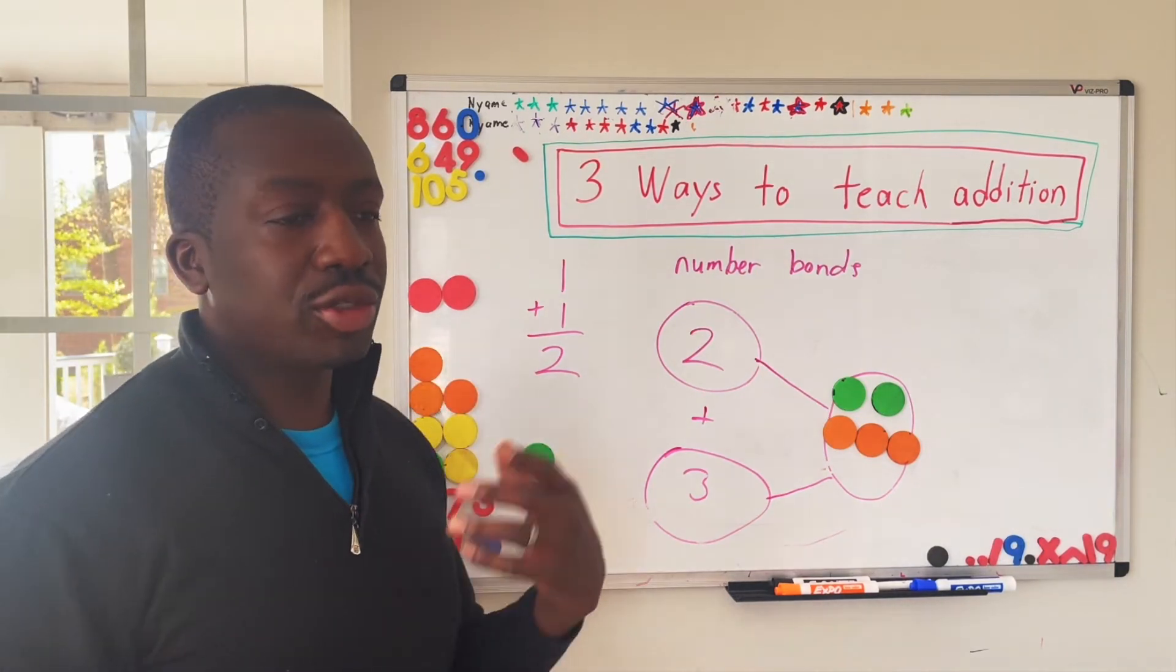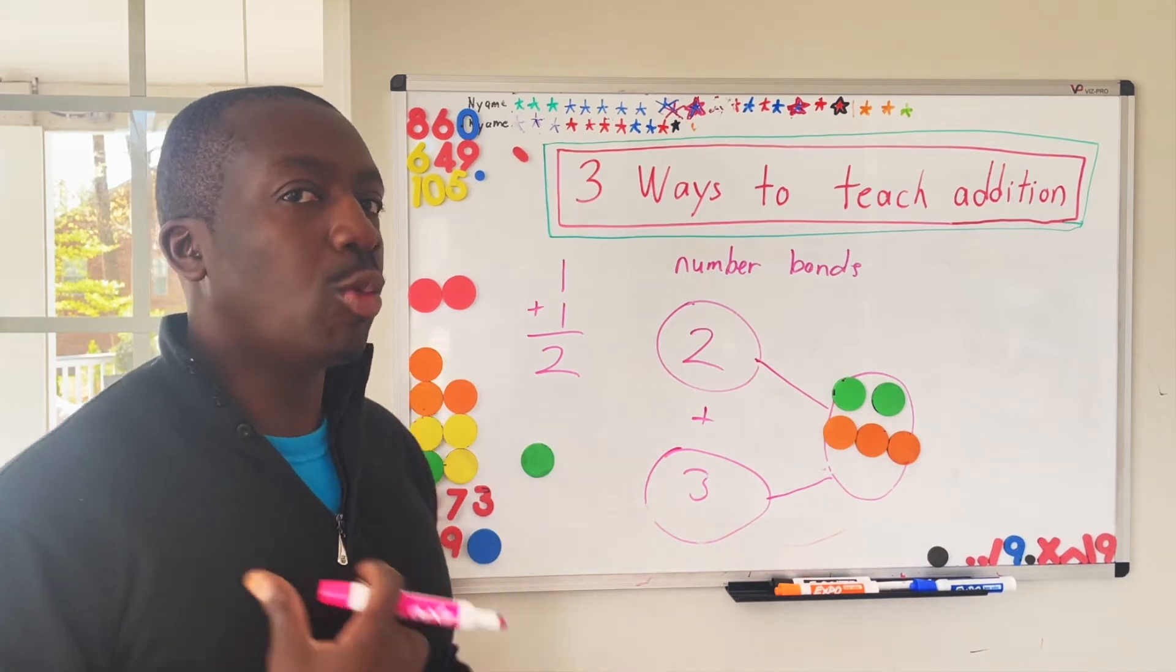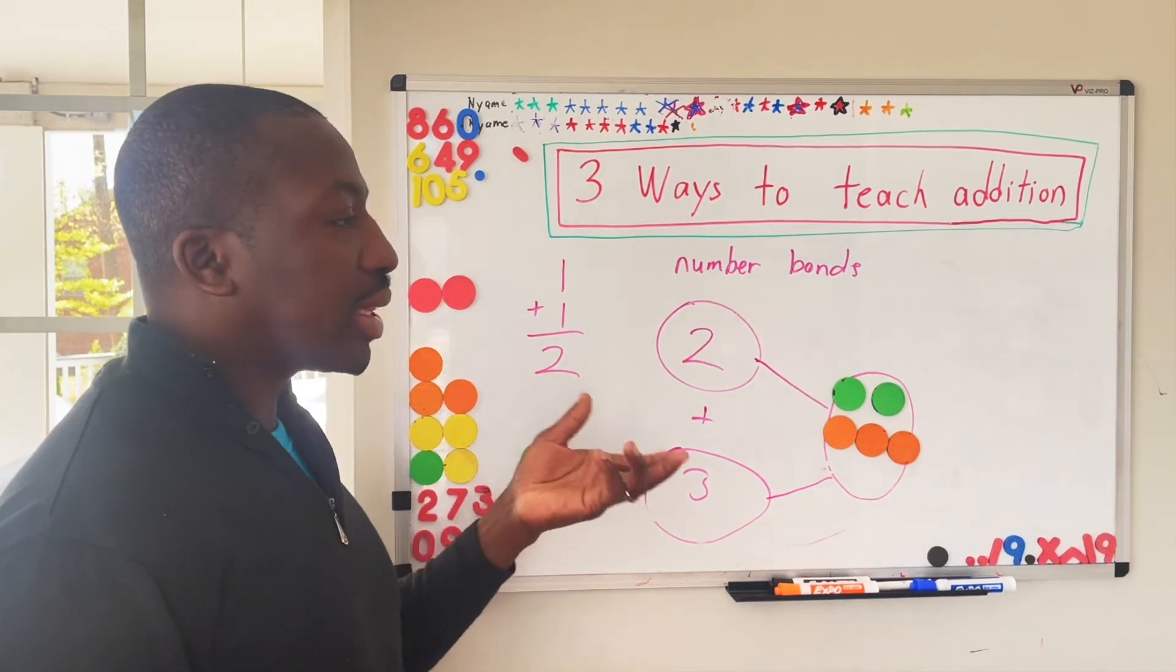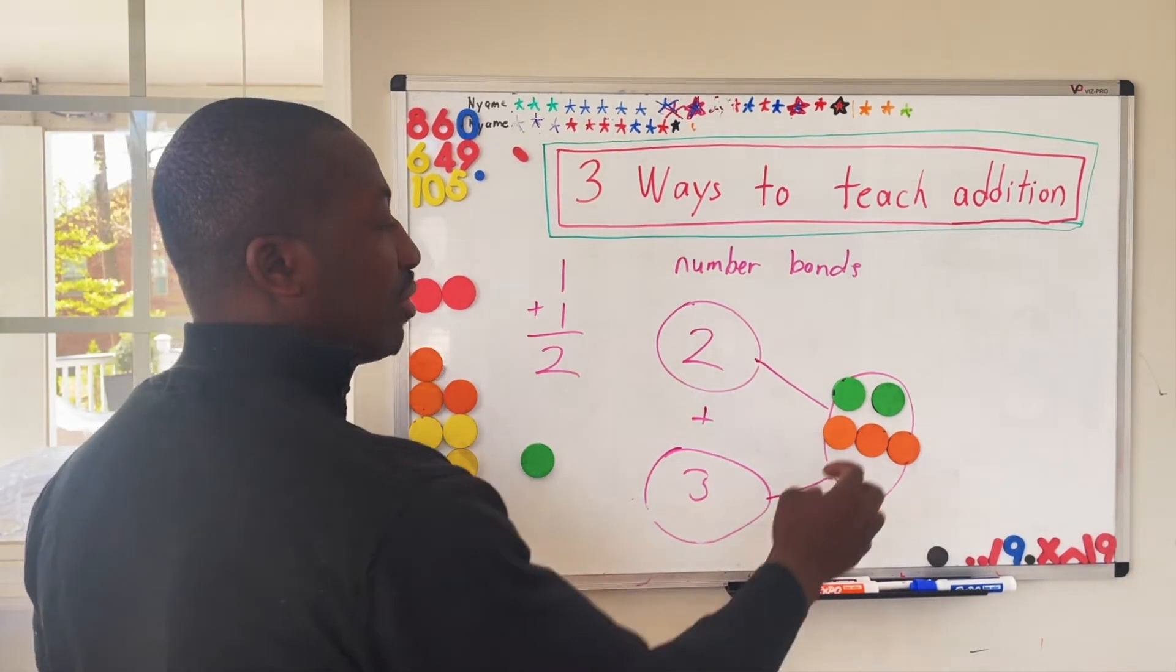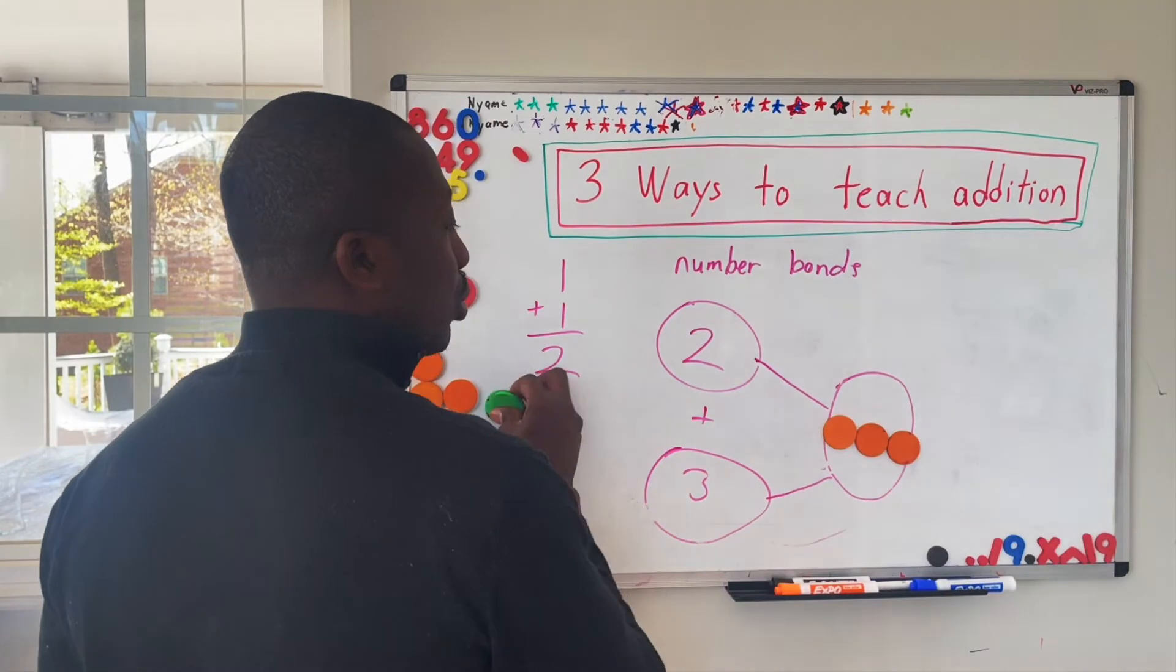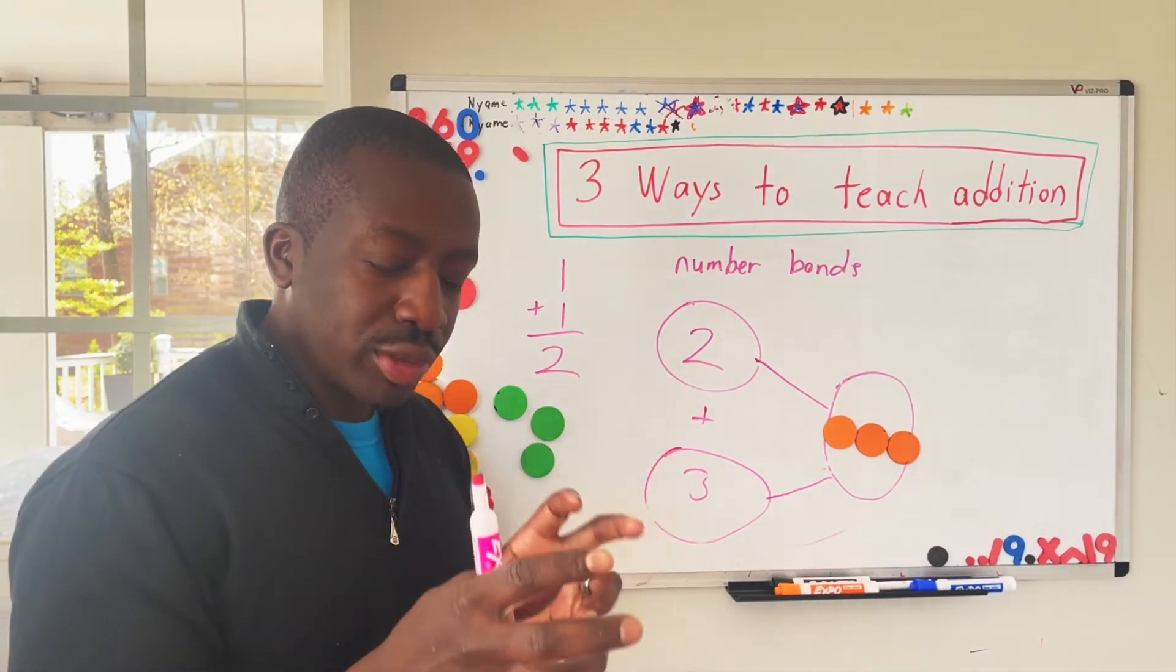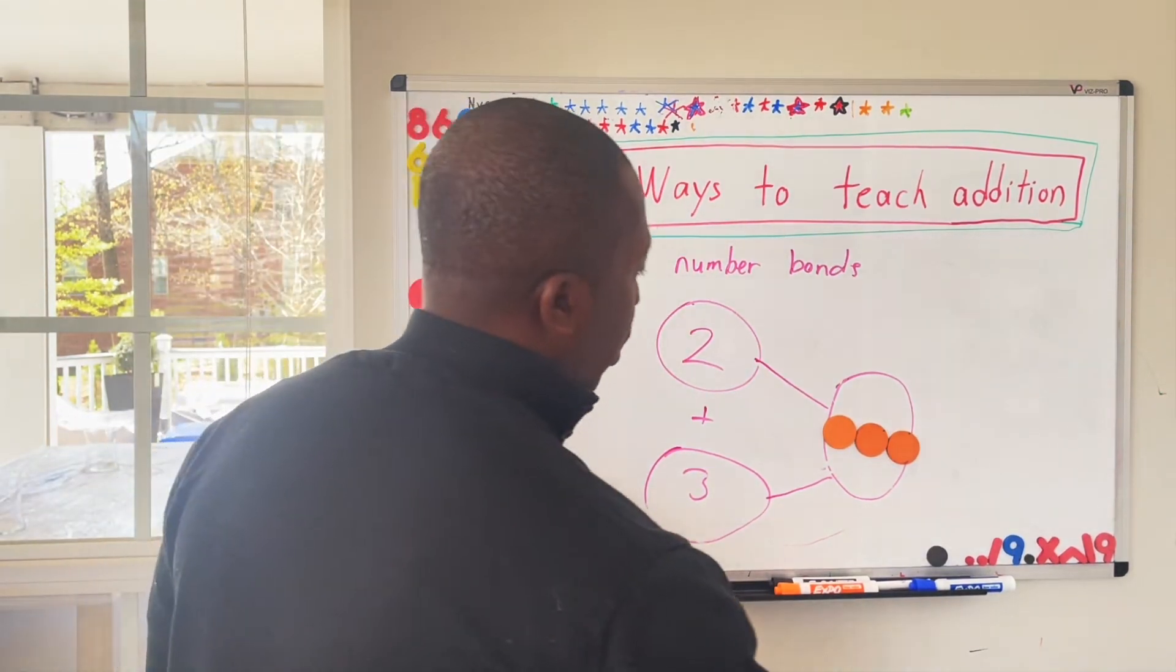If you start teaching addition, I would probably do the number correspondence. And then once they get the number correspondence, then introduce the number bonds, because sometimes interconnected circles can confuse them a little bit. But once they get this, this is really great because it also helps with subtraction where you have five, you can show them, if you take away two, then you have three. So the real benefit of this system of teaching addition is it shows how the numbers are interconnected. And that becomes helpful later on when they start to do more addition.